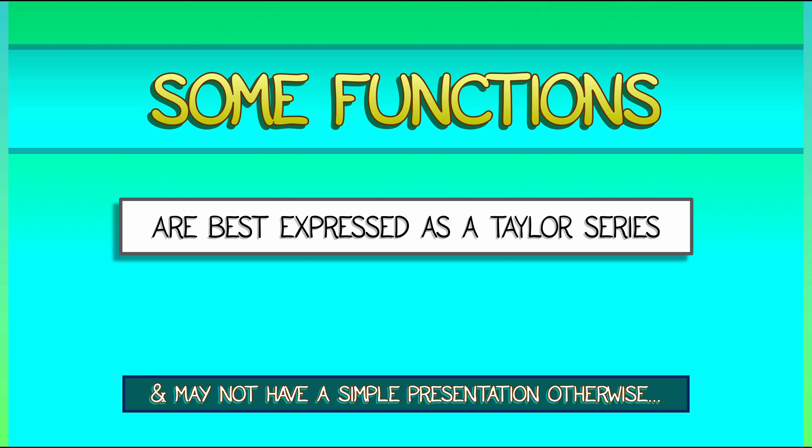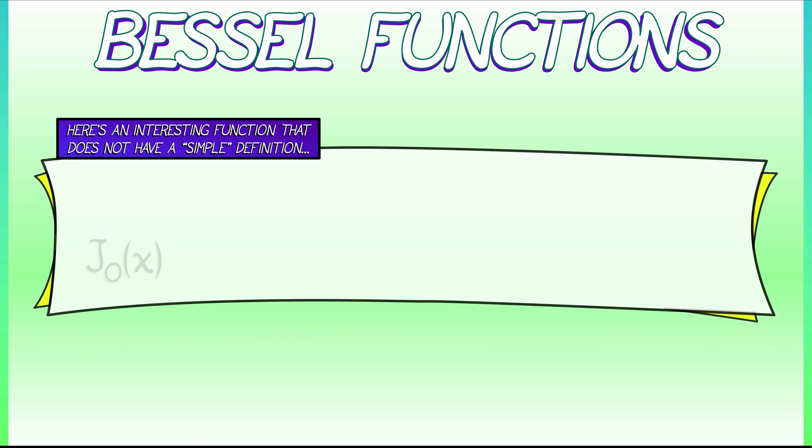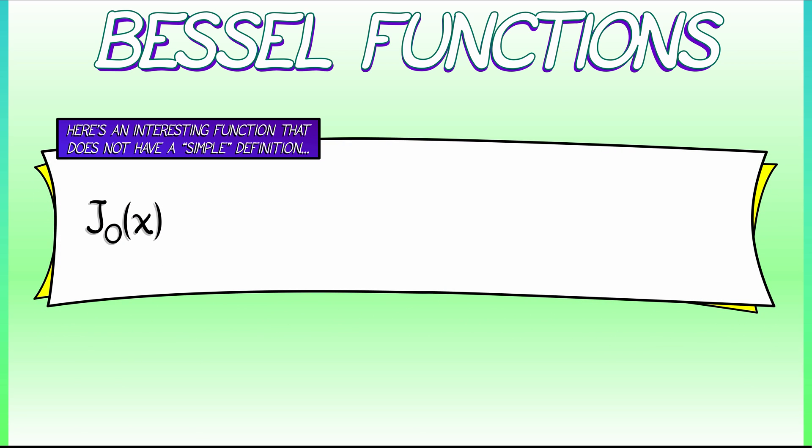One example of this is a Bessel function. These are really interesting functions that can't be easily expressed in terms of standard functions, exponentials, or trig functions. There are a lot of different types of Bessel functions out there. The simplest one is called J-naught.